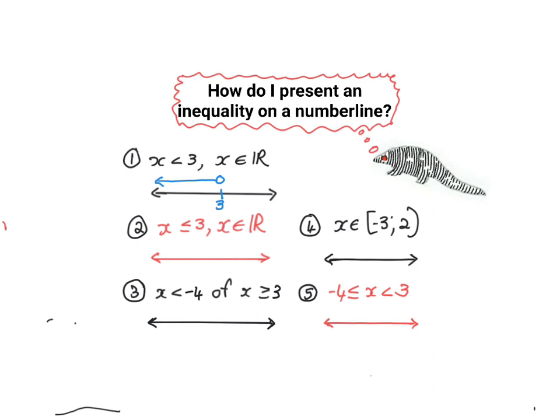If x is smaller than or equal to three, we once again highlight the three, but now we will shade this dot because three is included. So if there's a little equal to, that means we include three.